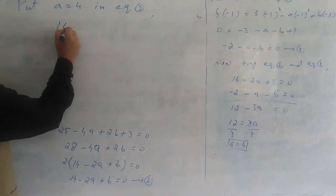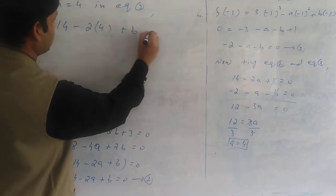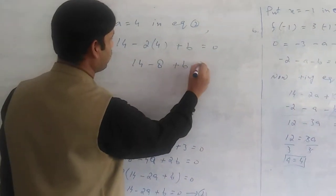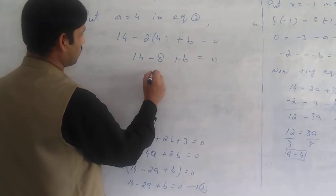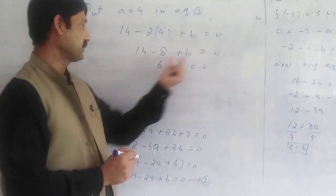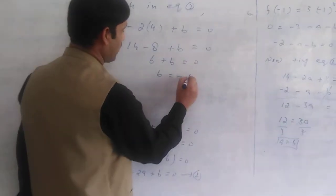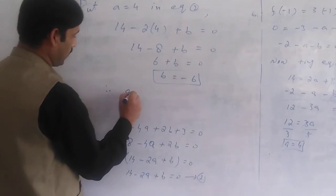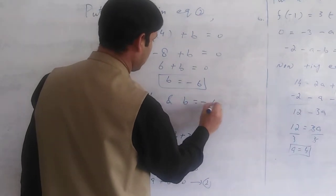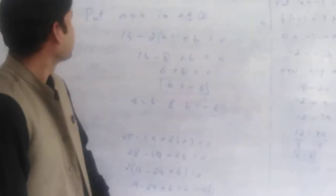We put a equals 4 in equation number 2. Here we have 14 minus 2 times 4 plus b equals 0. Then 14 minus 8 plus b equals 0. It becomes 6 plus b equals 0. Therefore b equals minus 6. So a value is 4 and b value is minus 6.